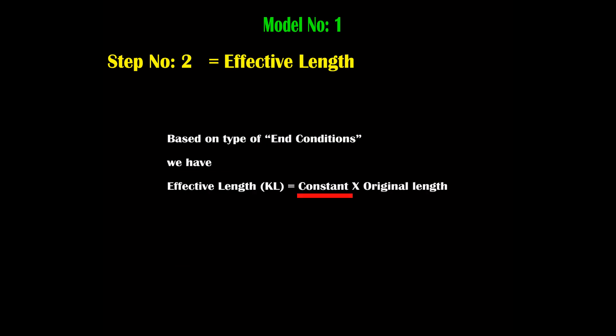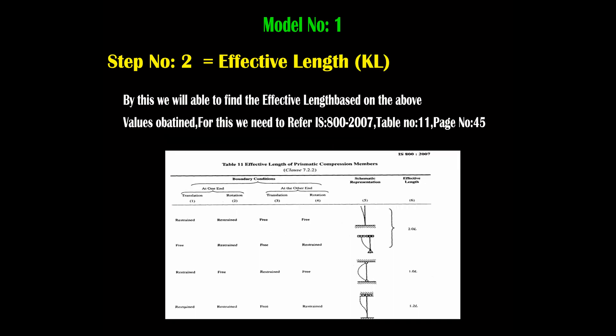Step number 2 is finding effective length. In this model, the end conditions are not given — effective length is directly given, so no need to find any condition or solve for effective length by multiplying a constant with original length. When original length is given, effective length equals a constant multiplied by original length. To get this constant value, refer to IS 800-2007 Table number 11, page number 45.